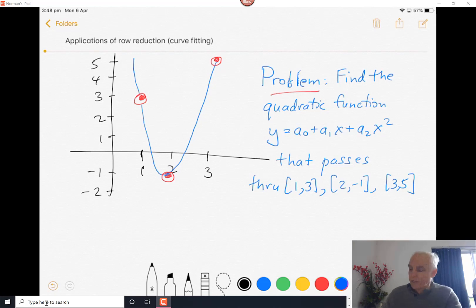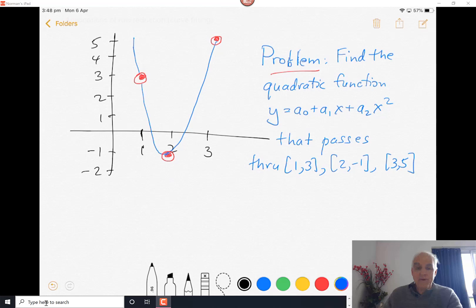So let's have a look at how it looks if we actually set up the corresponding system. We're starting with this function here, and we're going to be looking at the values when x is 1, when x is 2, and when x is 3. So we get three equations in the unknown variables a0, a1, and a2.